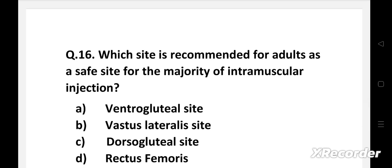Next question. Which site is recommended for adults as a safe site for the majority of intramuscular injections? Option A: Ventrogluteal site. B: Vastus lateralis site. C: Dorsogluteal site. D: Rectus femoris.